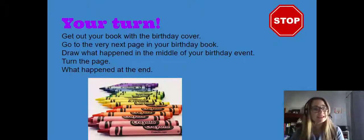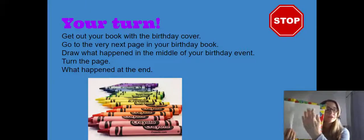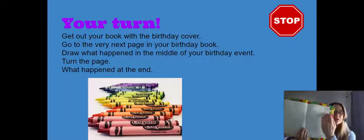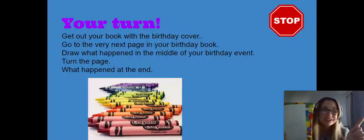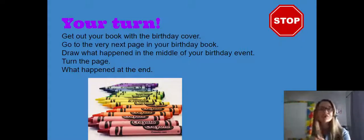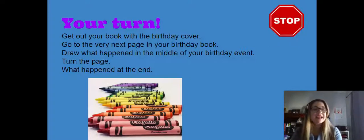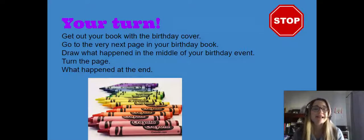Now you're going to turn one more time. You still have your lines at the bottom and your plain part at the top — this is your drawing part — where you can use this whole part to draw the pictures. No words yet. Draw the pictures that show what happened in the middle of your story, the events that happened. Then you're going to turn the page one more time and make your last page show what happened at the end of your birthday story.